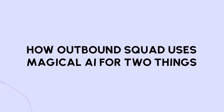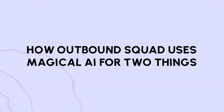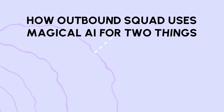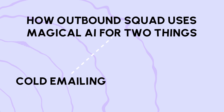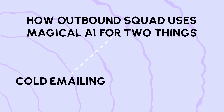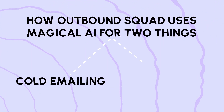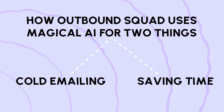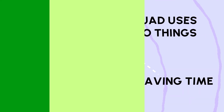What's going on? Today we're going to talk about how Outbound Squad uses Magical AI to do two things: how we get meetings set through cold emails, and how I save a ton of time when I'm prospecting and reaching out within accounts and prospects to land meetings.